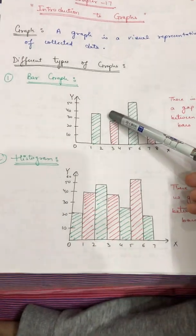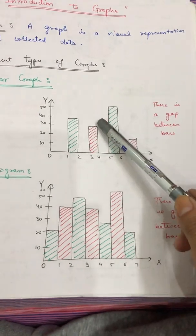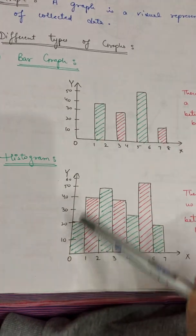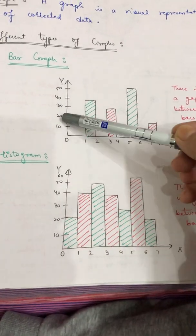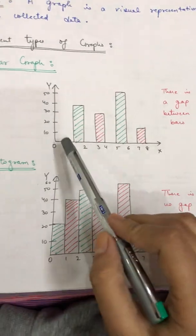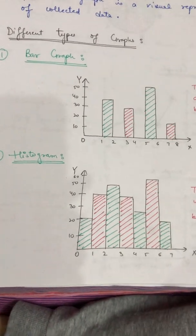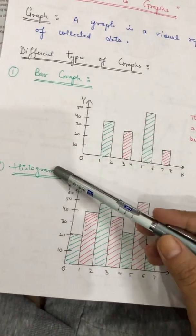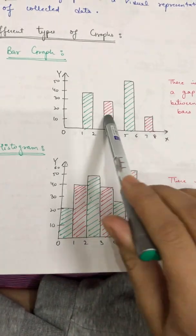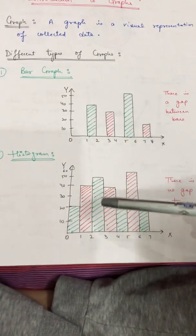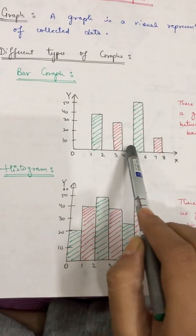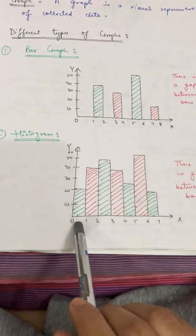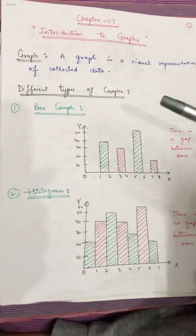There are different types of graphs: bar graph, histogram, and pie chart. In the bar graph and histogram, keep in mind that there will be two axes — x-axis and y-axis. The x-axis is a horizontal line and the y-axis is a vertical line. The center point or starting point is known as origin. Data is represented in the form of vertical bars in both bar graph and histogram. The difference is that in the bar graph there will be an equal gap between the bars, whereas in the histogram there will be no gap.